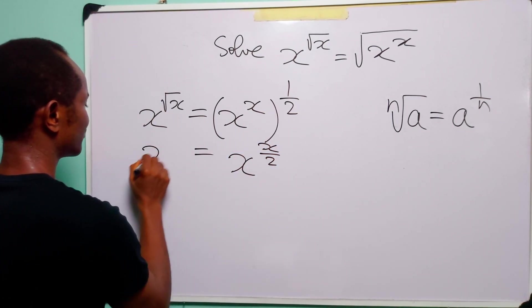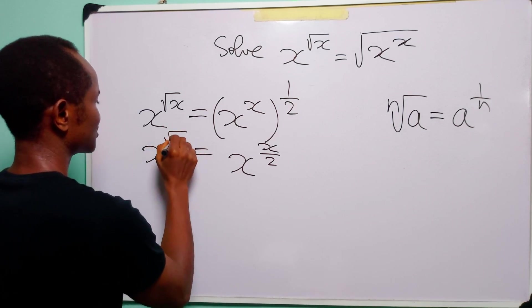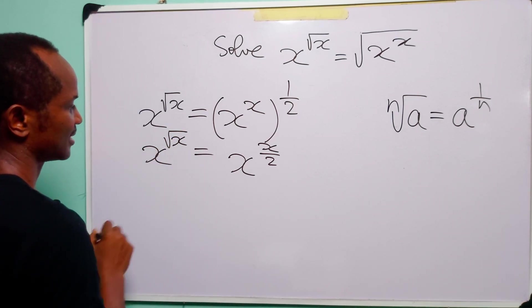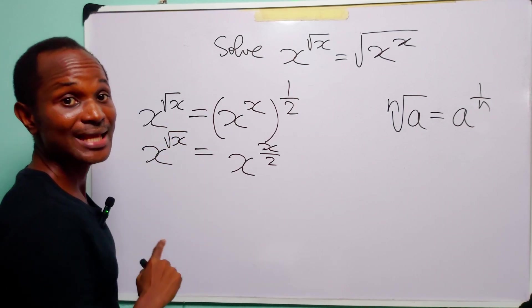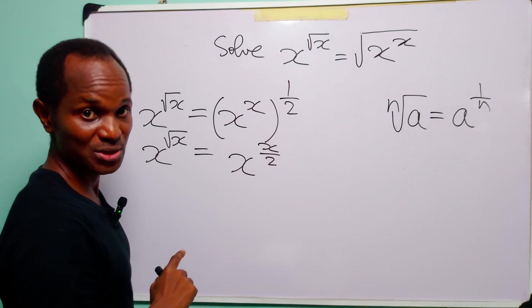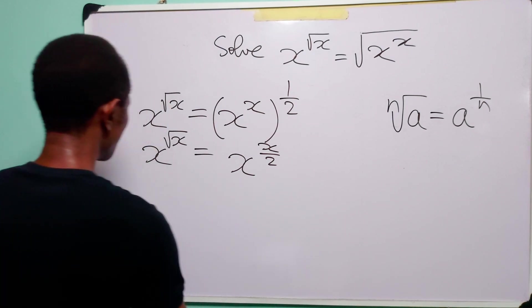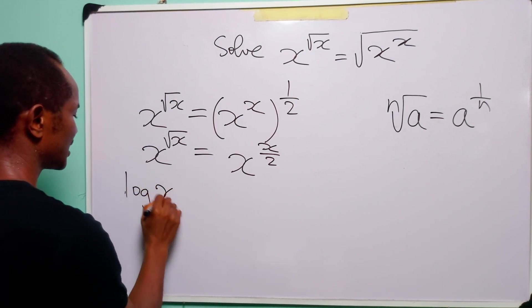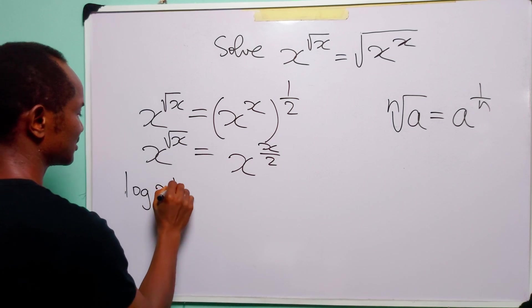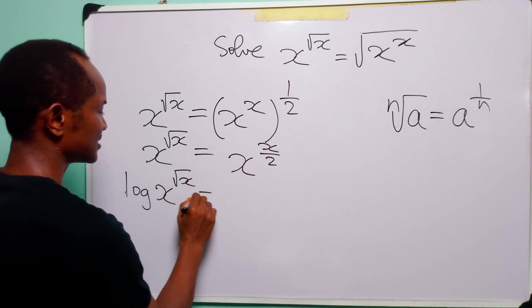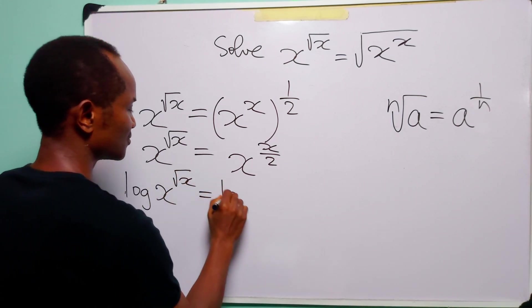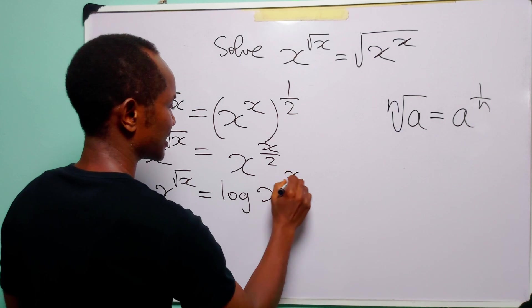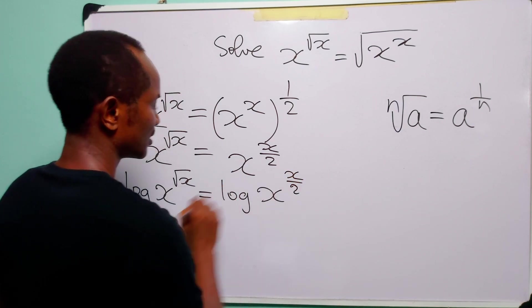Here we still have x to the power square root of x. Now at this point we take the log of both sides of the equation. When we do that we have log x to the power square root of x is equal to log x to the power x over 2.